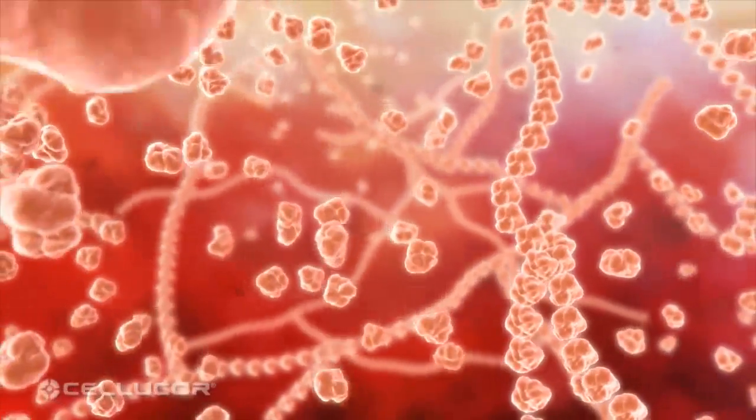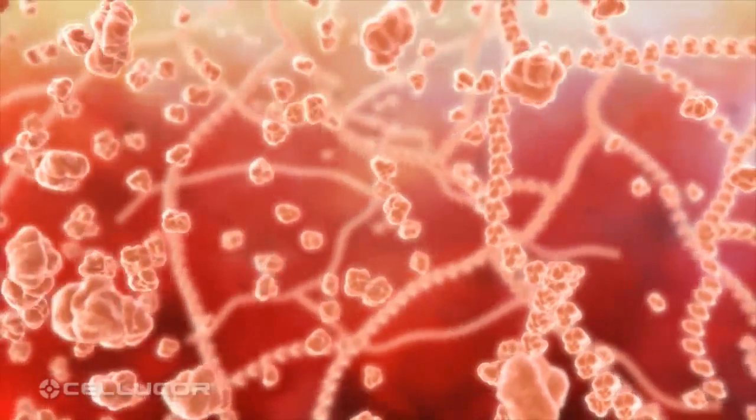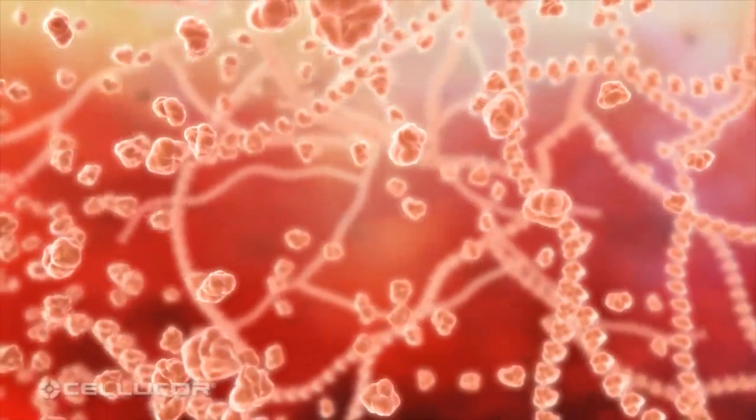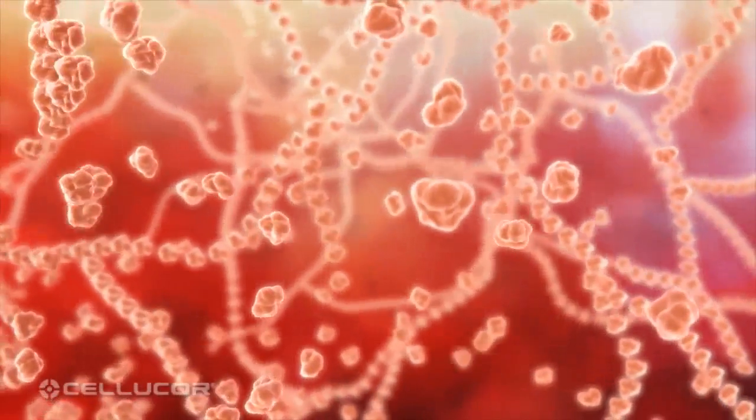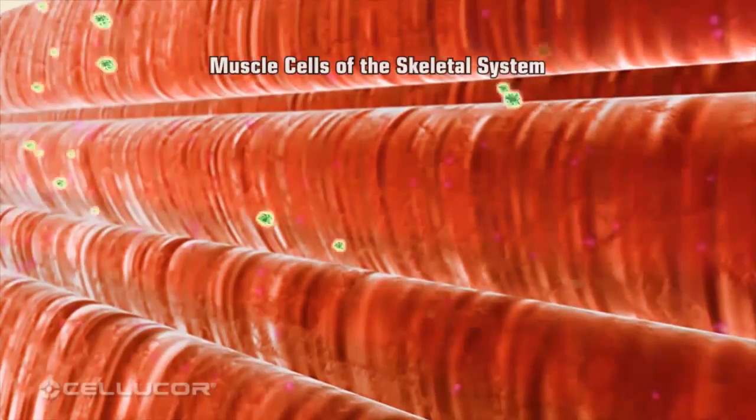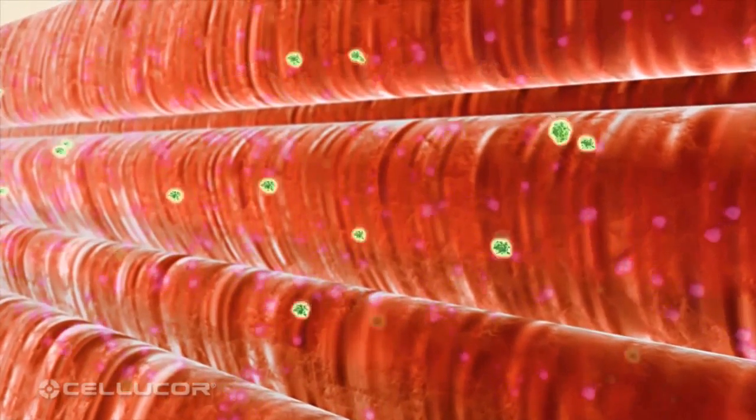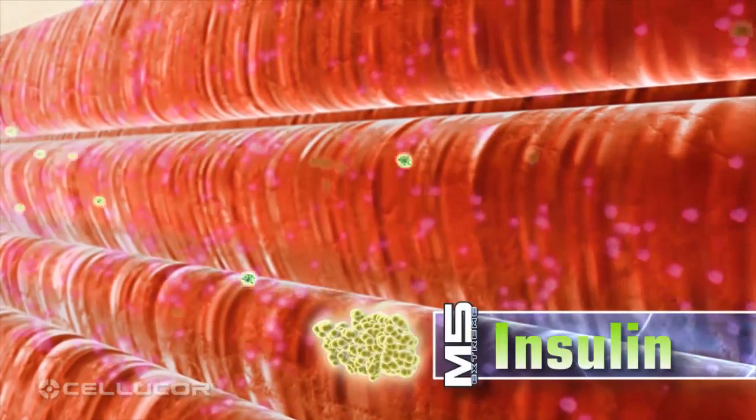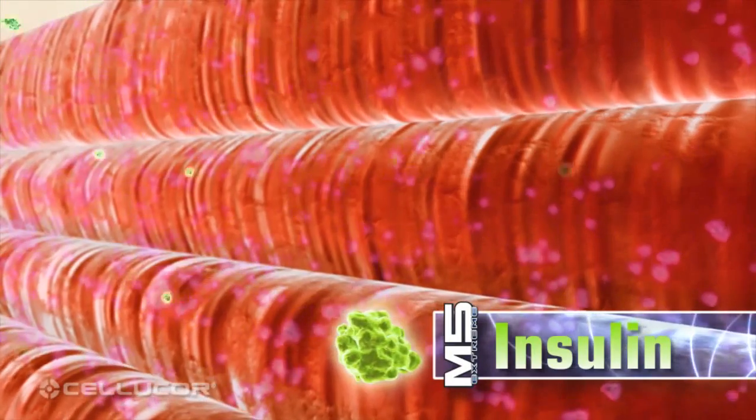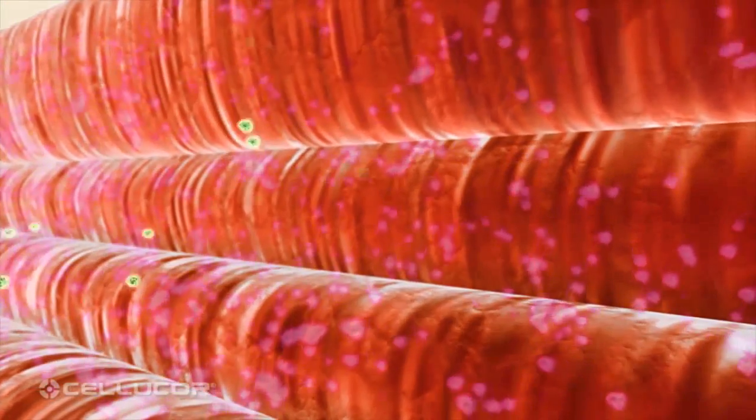M5 Extreme contains ingredients that promote glycogen storage and increase energy availability to muscle tissue. These active components work by making muscle cells more responsive to the natural hormone insulin. Insulin stimulates muscle cells to store more carbohydrates as glycogen, which increases muscle energy stores.